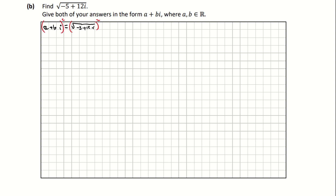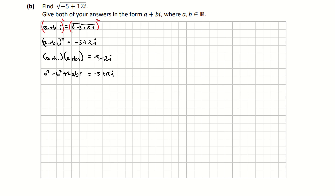Squaring both sides gives me a plus bi all squared is equal to negative 5 plus 12i. Multiplying out the brackets on the left gives a squared minus b squared plus 2abi equals negative 5 plus 12i. Note that when multiplying out the brackets you get plus bi squared, and i squared turns into negative 1, which is where the minus b squared comes from.